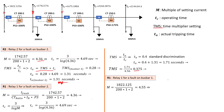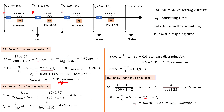For relay 1 on a fault on bus bar 1, the fault current is 1.8 kilo amps, giving M equal to 4.55 and TC equal to 4.56 seconds. Using TMS of 0.375 and TC of 4.56 seconds, TA equals TMS times TC, giving TA equal to 1.71 seconds. So the actual tripping time for relay 1 on bus bar 1 is 1.71 seconds. There is a clear grading margin difference across the relay chain.